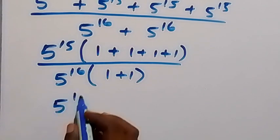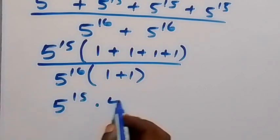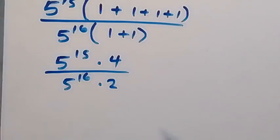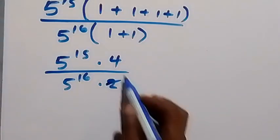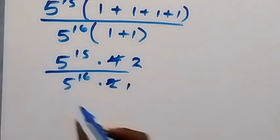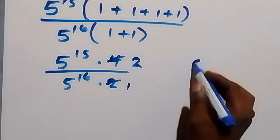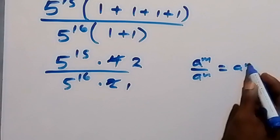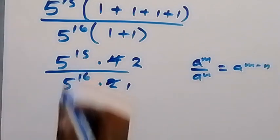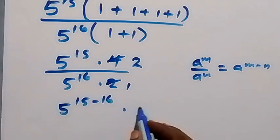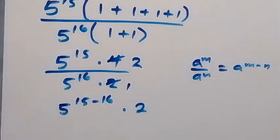This gives us 5 raised to power 15 times 4, divided by 5 raised to power 16 times 2. The 2 goes into 4, leaving us with 2 up here. Applying the law of indices — a raised to power n over a raised to power n equals a raised to power n minus n — we subtract the powers to get 5 raised to power 15 minus 16, times 2.